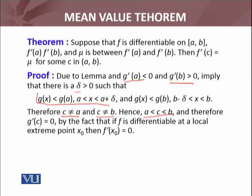Hence c must be between a and b, and therefore g'(c), which is a local extreme value, must equal zero by the fact that if f is differentiable at a local extreme point x₀, then f'(x₀) = 0. So g has local extreme value at c, therefore g'(c) = 0.